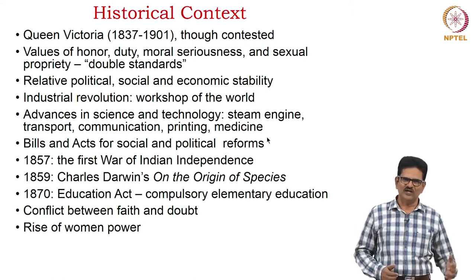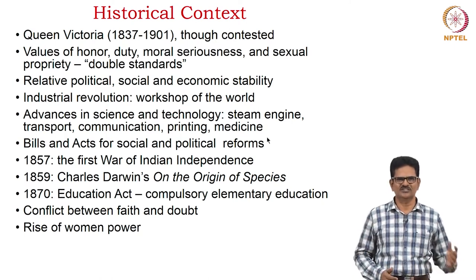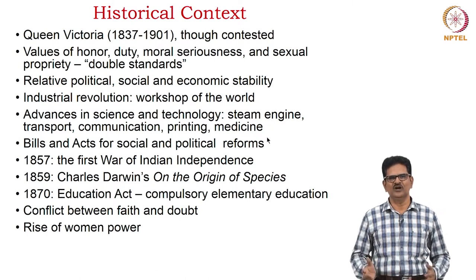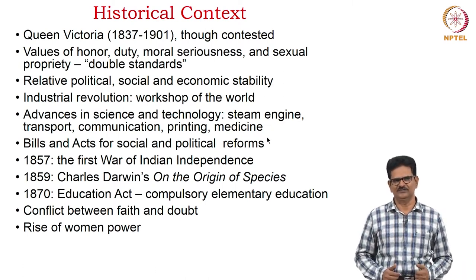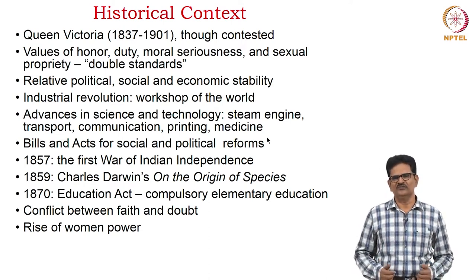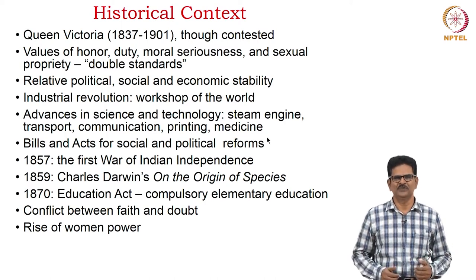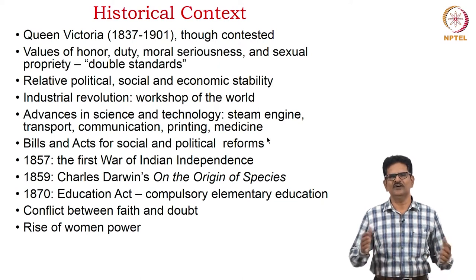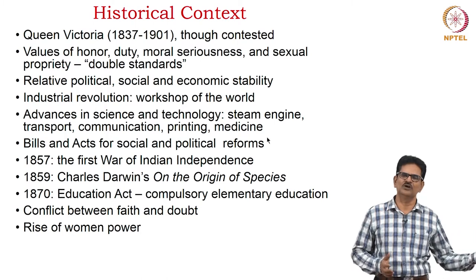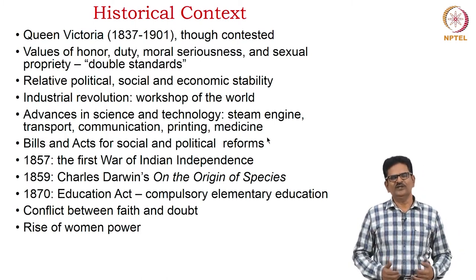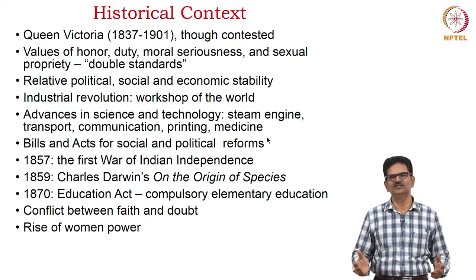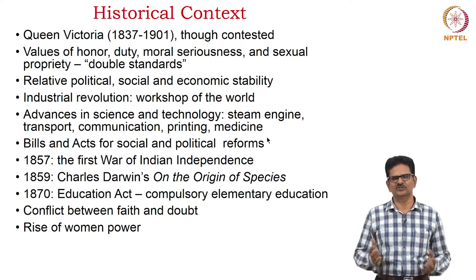This period also witnessed advances in science and technology — steam engine, transport, communication, printing and medicine, among others. There were many social and political reformations for which several bills and acts were passed. Notable historical events include the 1857 First War of Indian Independence, which shook the British Empire. In 1859, Charles Darwin published On the Origin of Species, shaking Western beliefs. The 1870 Education Act brought in compulsory elementary education for all people in England and brought about radical social change.